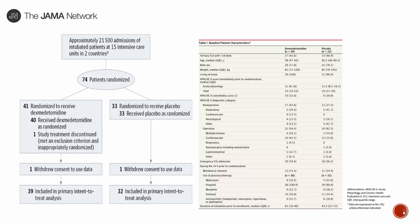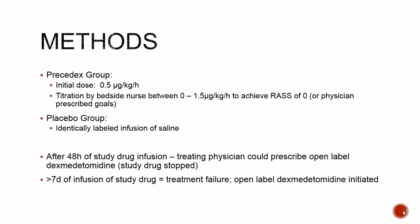After withdrawals and one incorrect randomization, 39 were in the Precedex arm and 32 in the placebo arm. Baseline characteristics showed patients were mostly male, mid-50s in age, with relatively low APACHE scores of 10–14, indicating lower overall mortality. Over 50% were operative patients. At least a third required restraints prior to enrollment, and nearly all required some sedative medication. Notably, patients in the Precedex arm were intubated approximately 20 hours longer prior to enrollment.